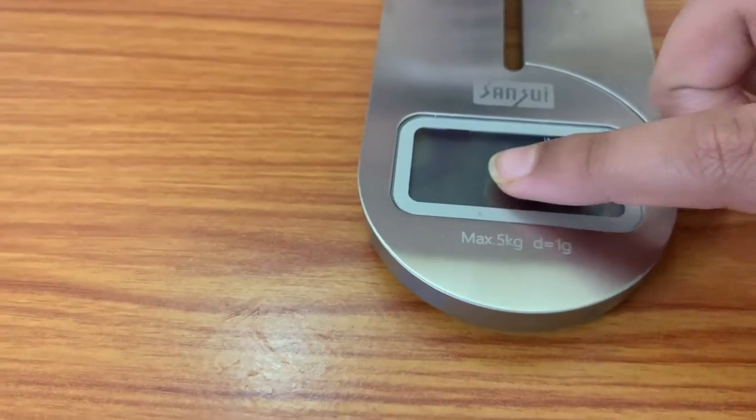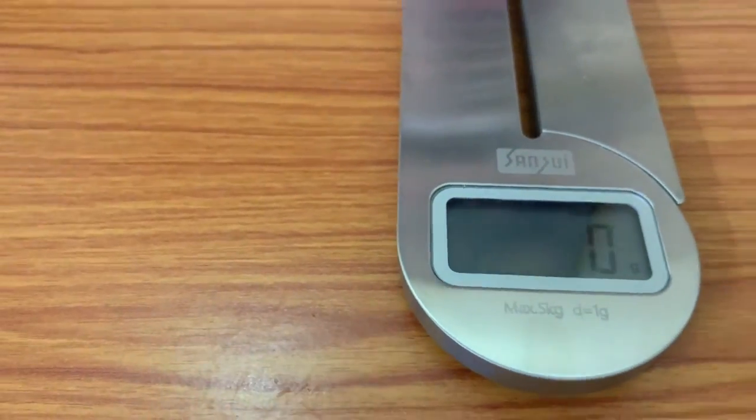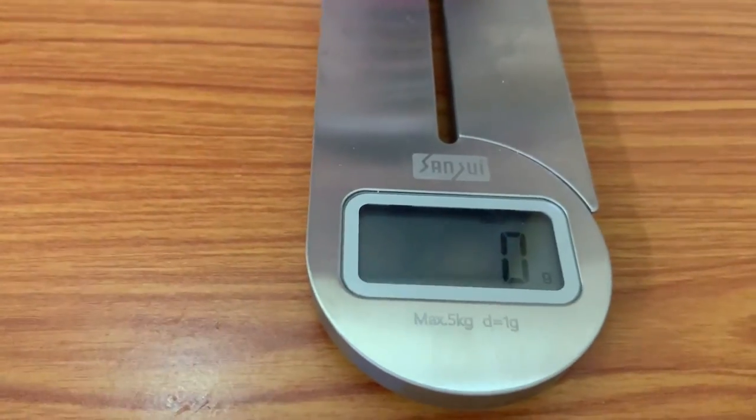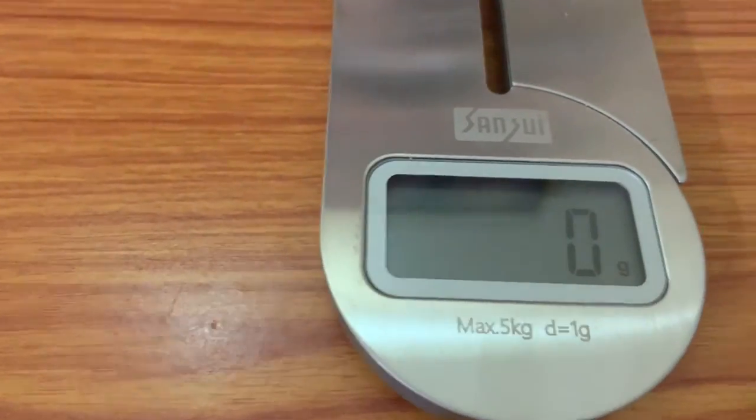So now it becomes zero again. And if you don't do the tare option, then it won't show you in 1 gram, it will only show you from 5 grams. So I always like to do the tare option.